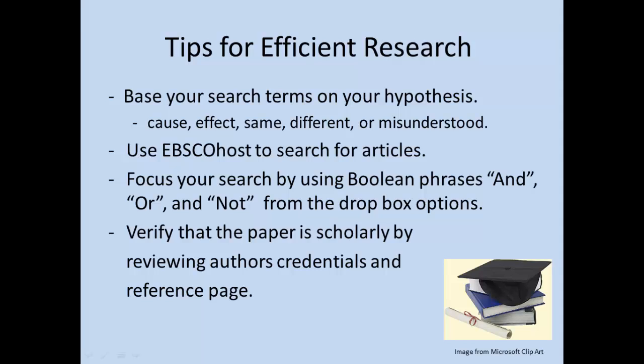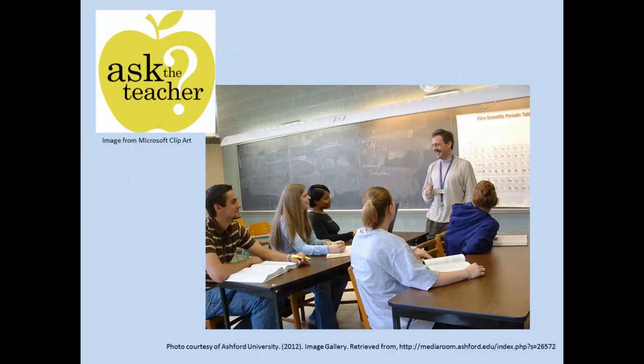Let's review tips for efficient research. Base your search terms on your hypothesis, and include words such as cause, effect, same, different, or misunderstood. This will ensure that you find articles that directly reflect your ideas and help you develop an excellent paper. Use EBSCOhost to search for articles, and focus your search by using Boolean phrases — AND, OR, and NOT — from the dropdown options. Verify that the paper is scholarly by reviewing the author's credentials and reference page. If you are ever uncertain whether an article is scholarly, be sure to ask your instructor.